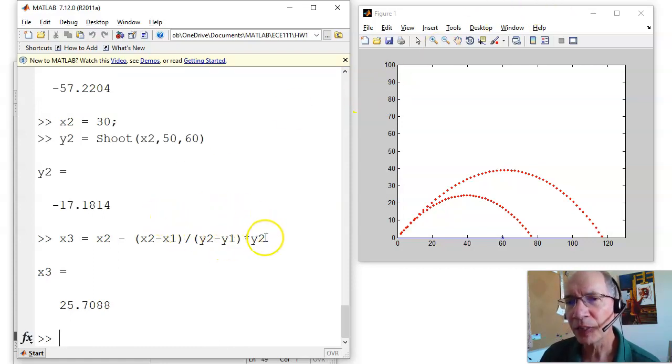There's the slope, or one over the slope, times the error. And to kind of figure out how that works, the y's cancel. I've got y over y, so the units are x. I have x minus x, so the units all match up. This says that my next guess should be 25.7088.